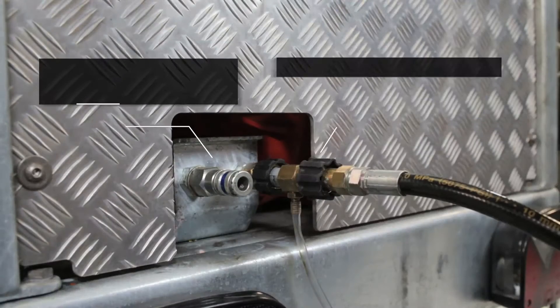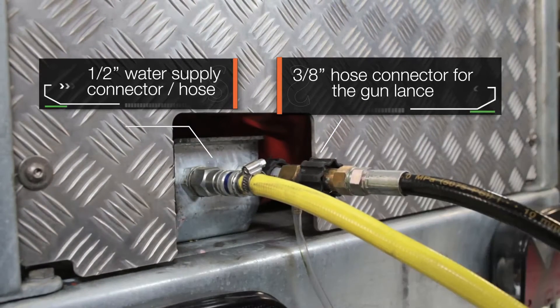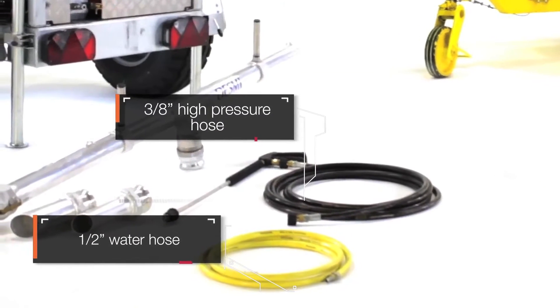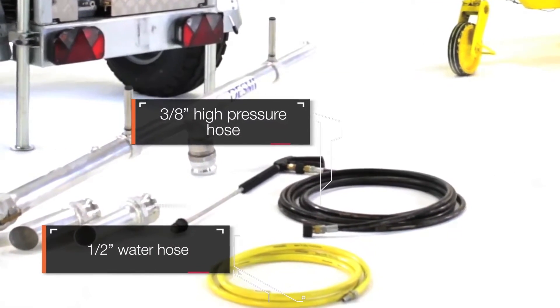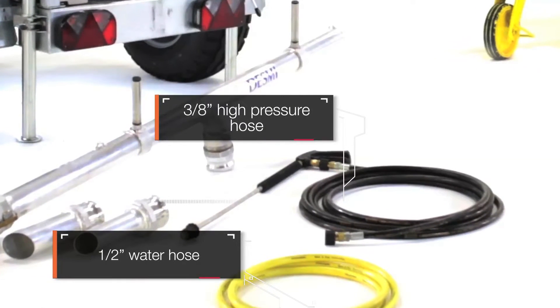All connections are located below the control panel of the Rovac for easy access. The high-pressure washer system consists of the water supply hose, the chemical dispenser, and the high-pressure water gun.